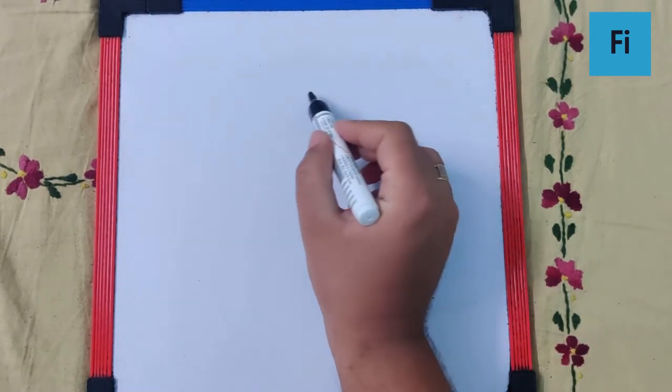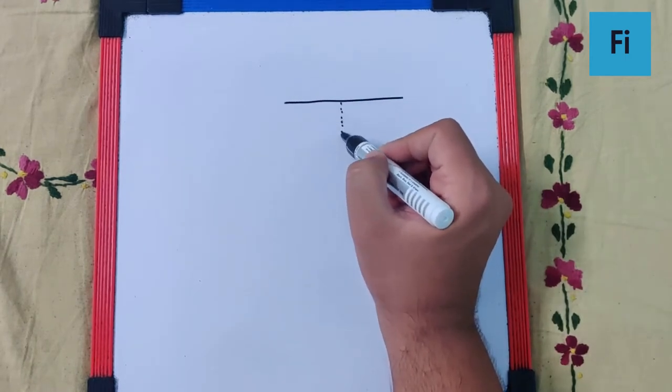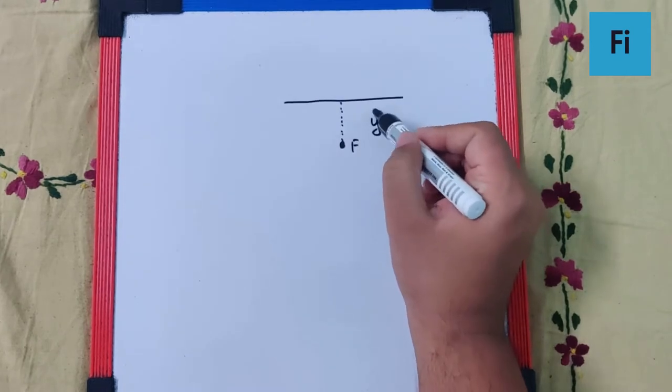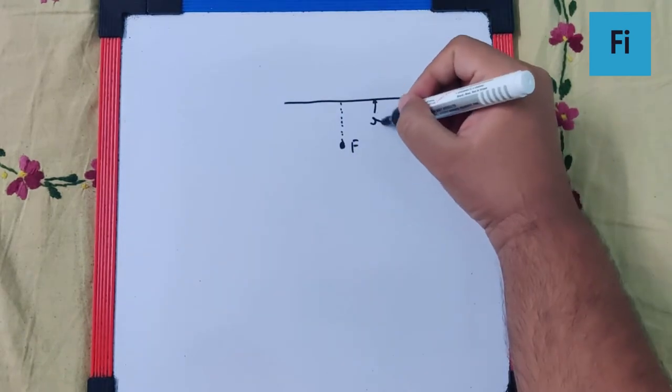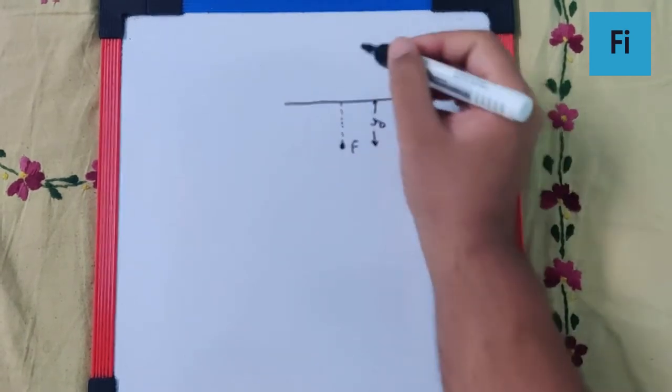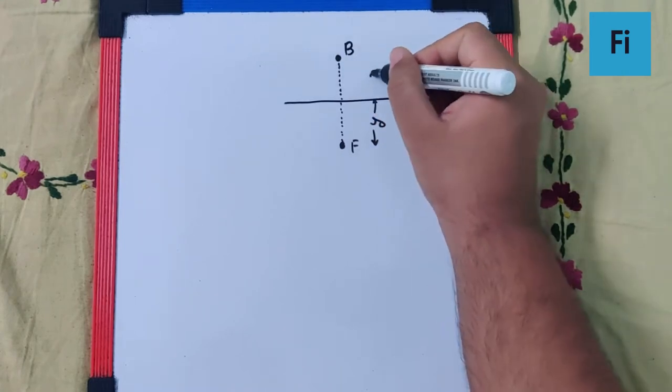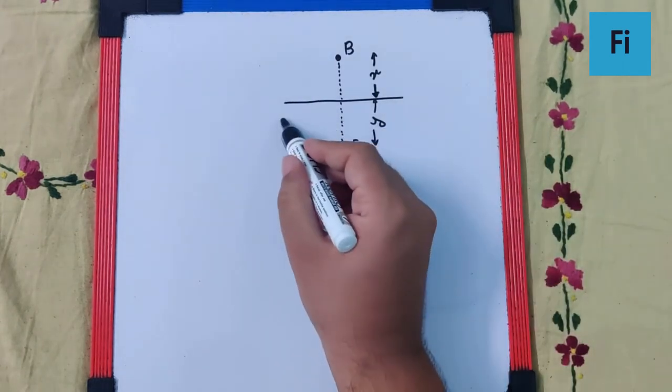Let me draw this. The fish is at a distance y. I'll write it like this, okay. And there is a bird which is at distance x, and the refractive index given is mu.